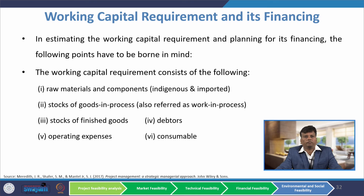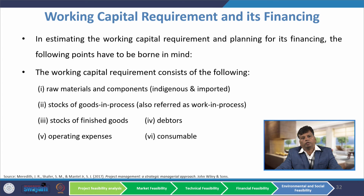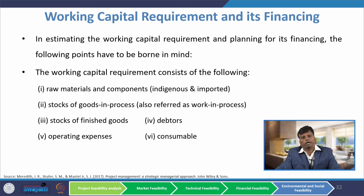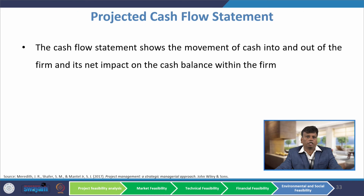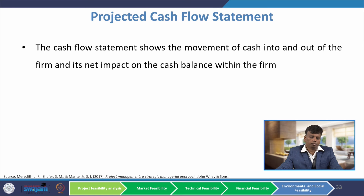Another element in financial feasibility is working capital requirement and its financing. Working capital is the day-to-day cash requirement for running the project. Working capital requirement consists of: raw material and components, stocks of goods in process, stocks of finished goods, debtors, operating expenses, and consumables. Another important document is the projected cash flow statement, which shows the movement of cash into and out of the firm and its net impact on the cash balance within the firm.